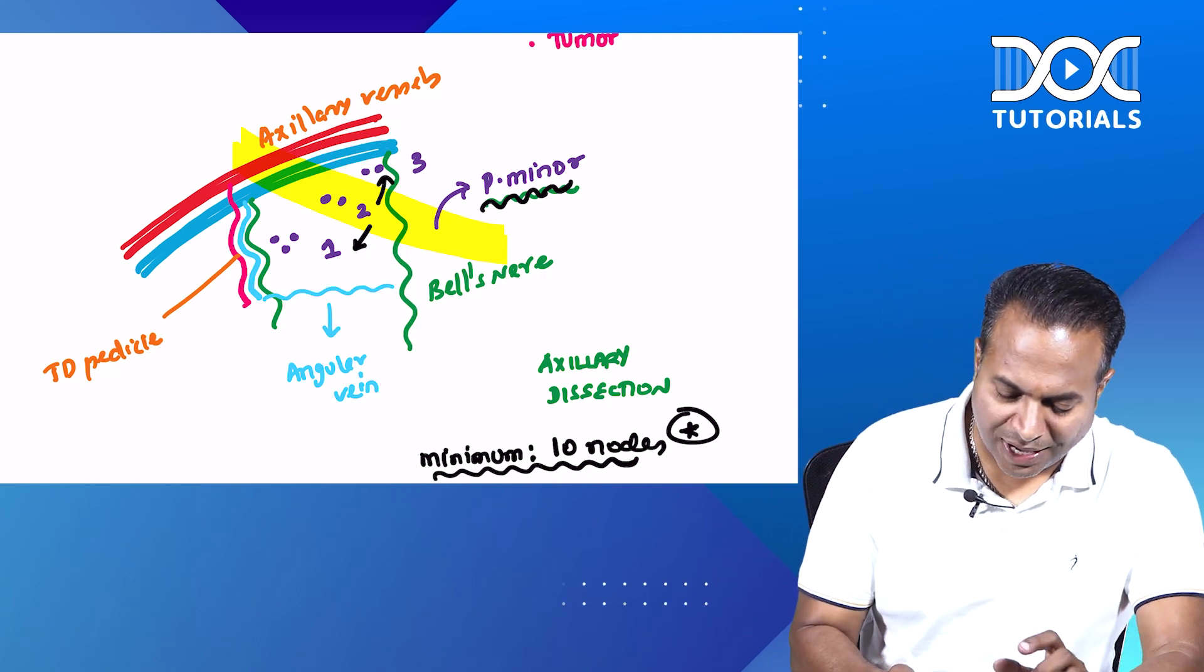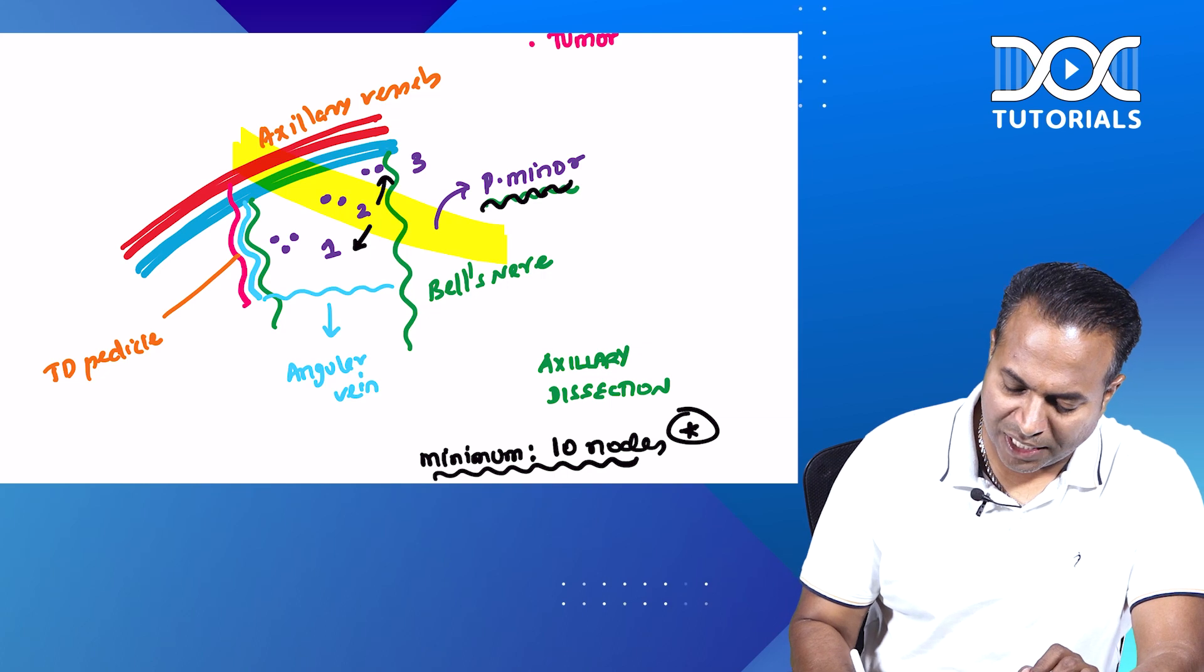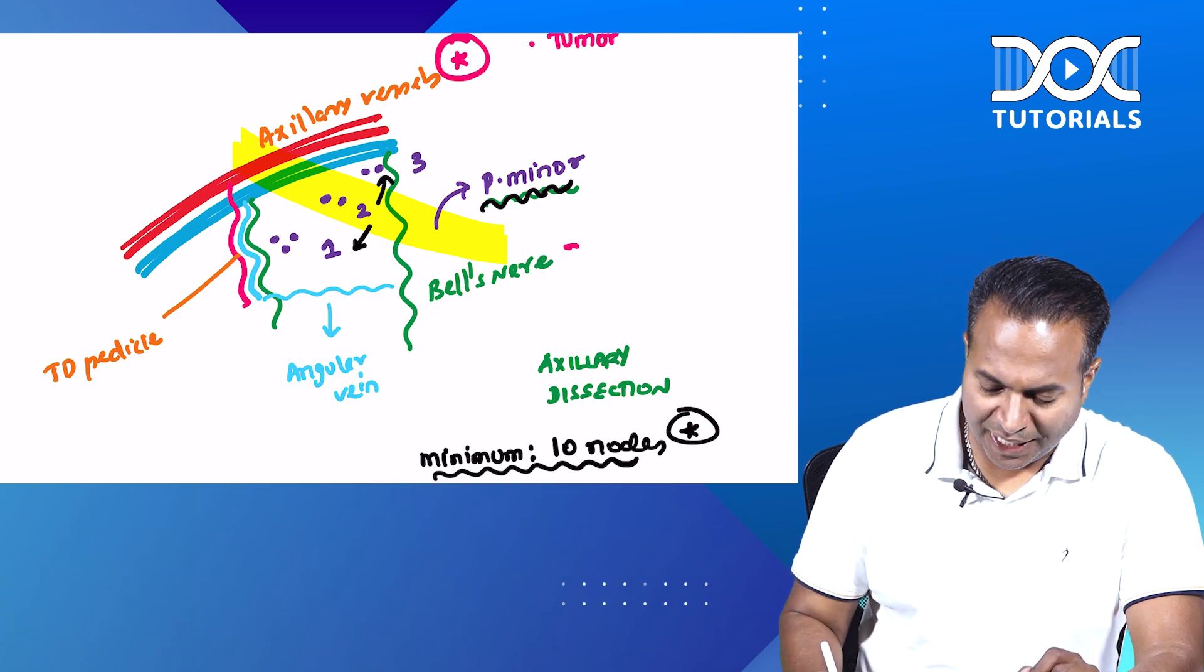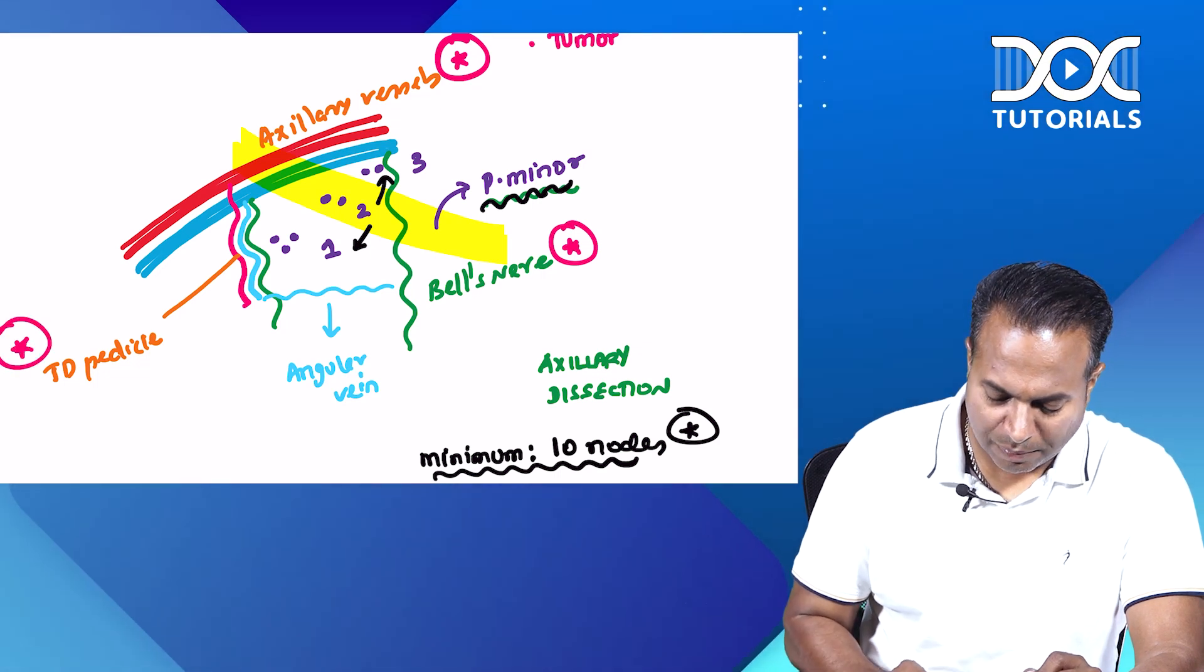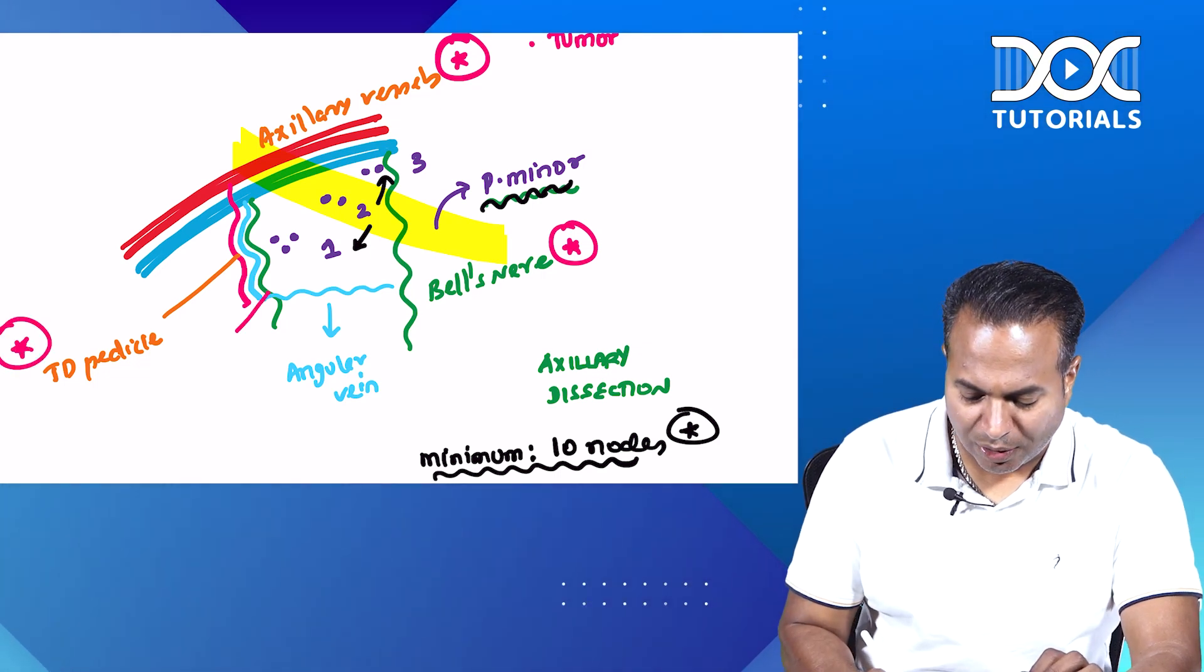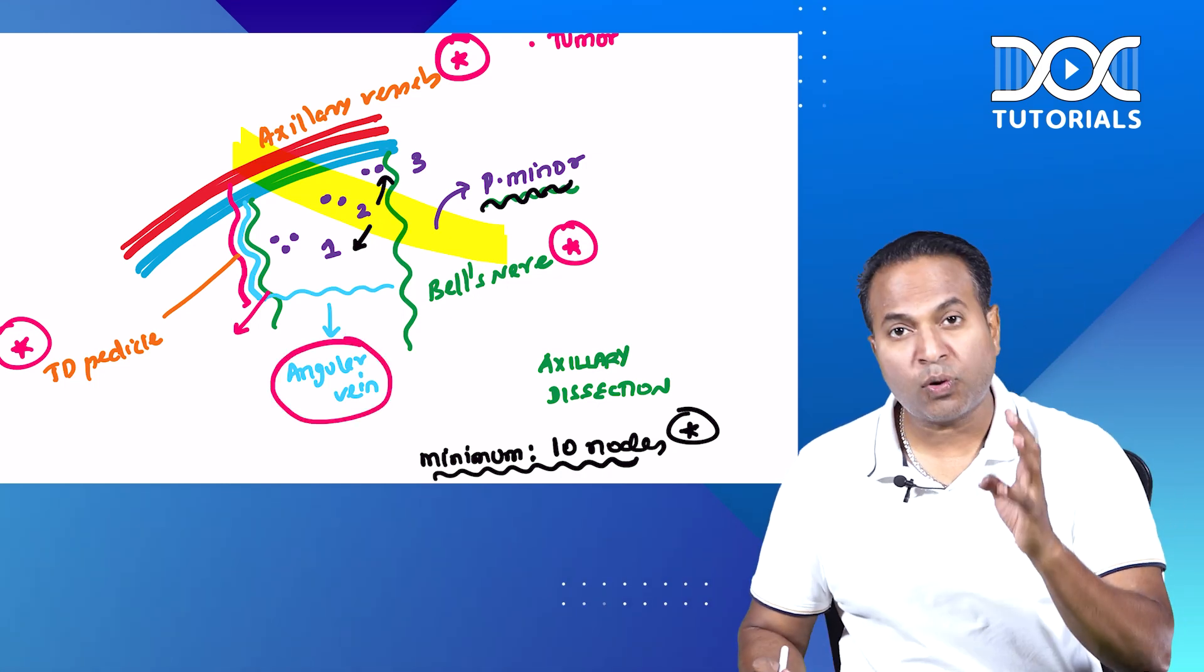So what are the boundaries of axillary dissection is a repeat MCQ. The boundaries are: superiorly, axillary vessels; medially, bells nerve; laterally, thoracodarsal pedicle containing nerve to latissimus dorsi; inferiorly, angular vein. There are four landmarks.